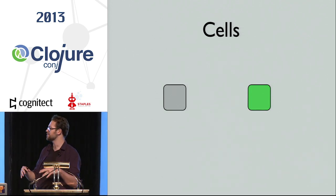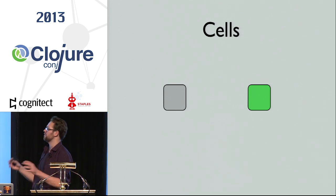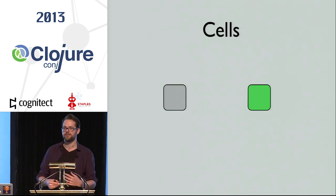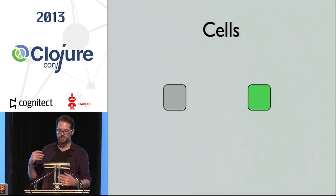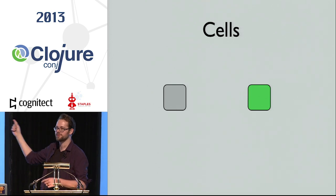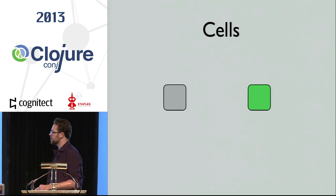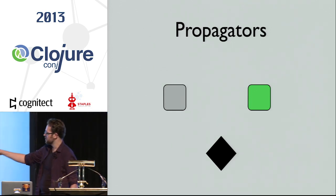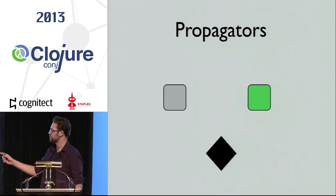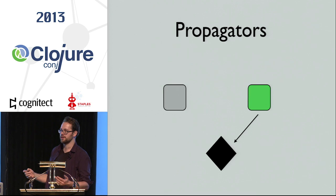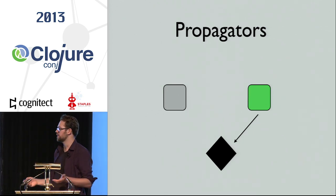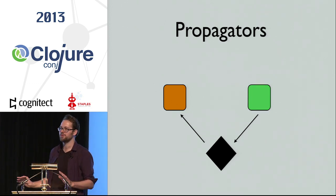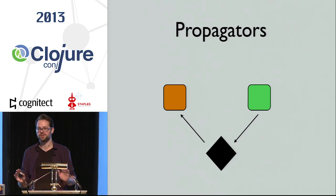In propagators, the main computation unit is cells. A cell either holds a value or holds no value — gray means no value, green means it holds something. Importantly, as soon as a cell takes on a value, that's the value it's going to have. Once a cell has a value, it's immutable from there on. The way we put values into cells is either by directly setting it or using propagators. A propagator listens to one or more cells, and whenever a cell's value is updated, the propagator is informed, can perform some computation, and can in turn set the value of other cells, triggering further propagators. It's an extremely simple model.